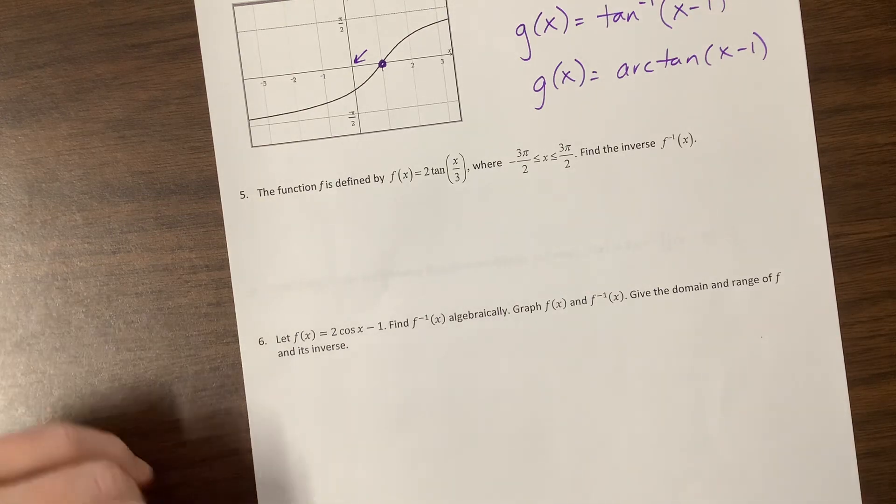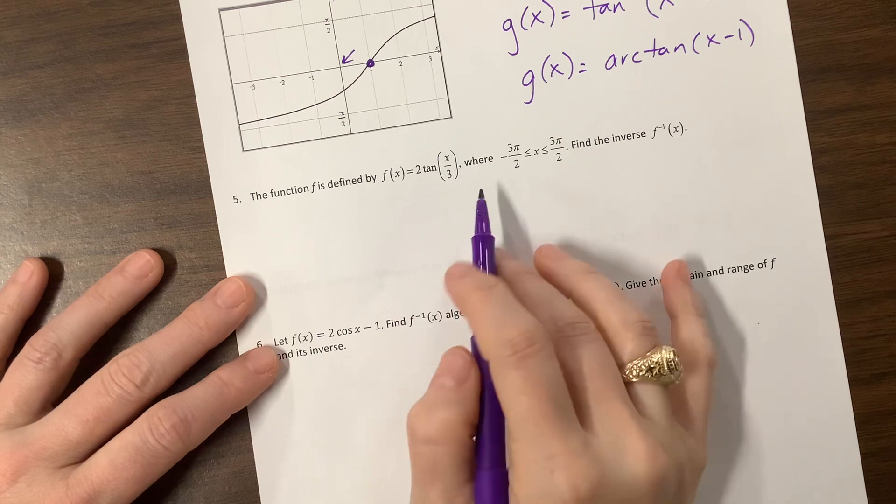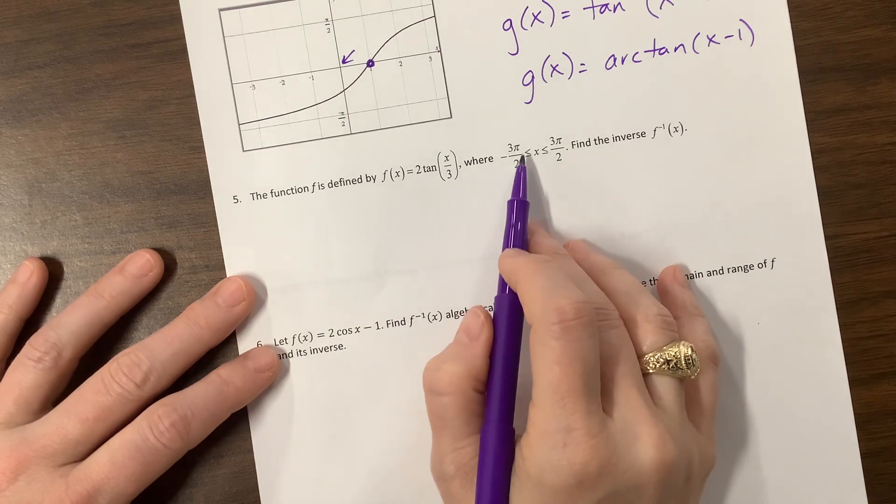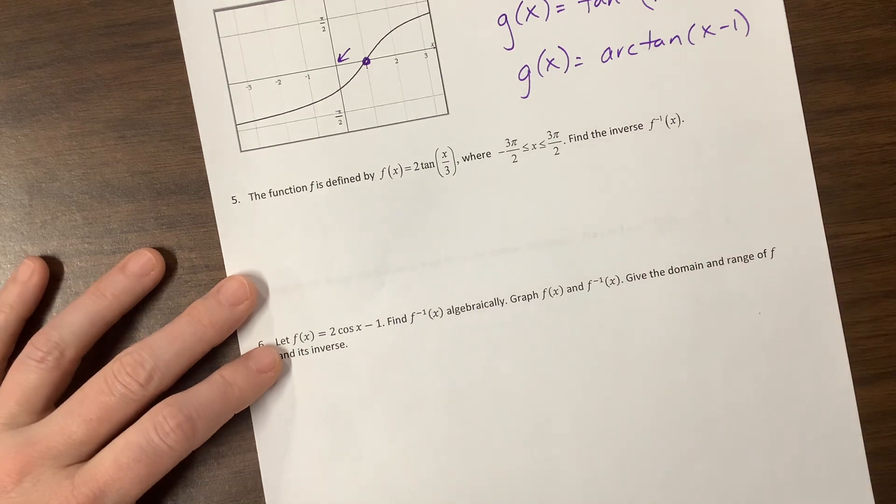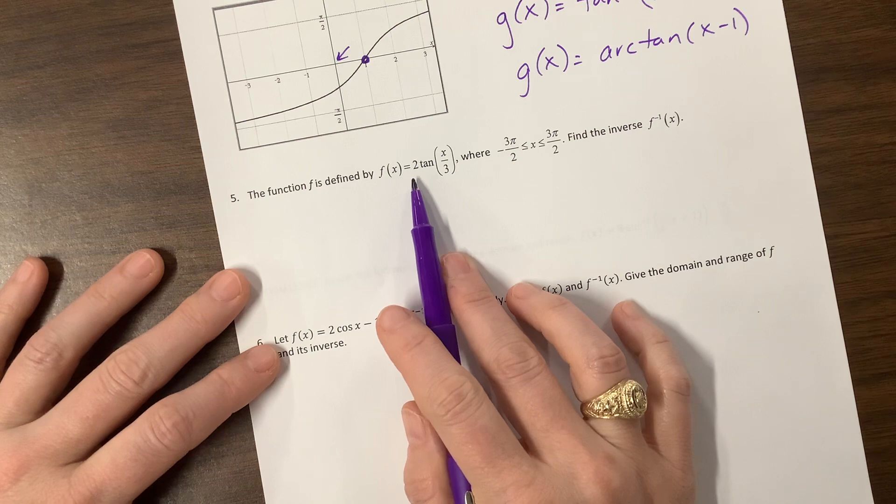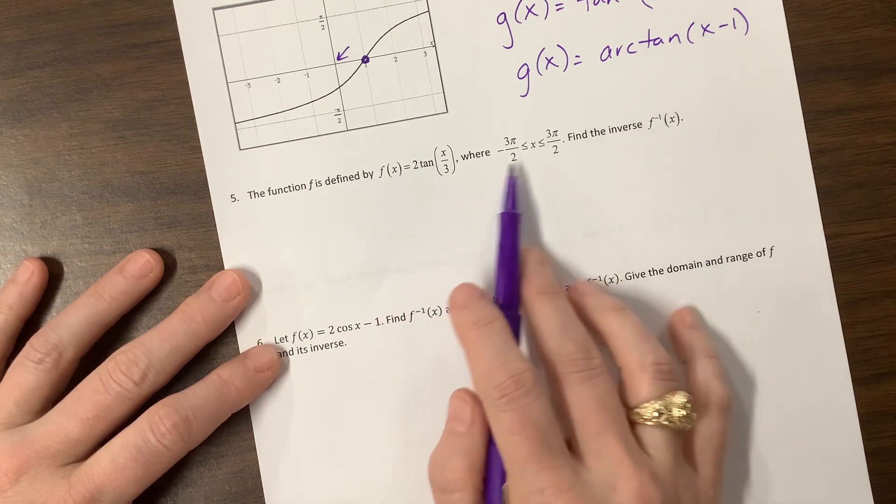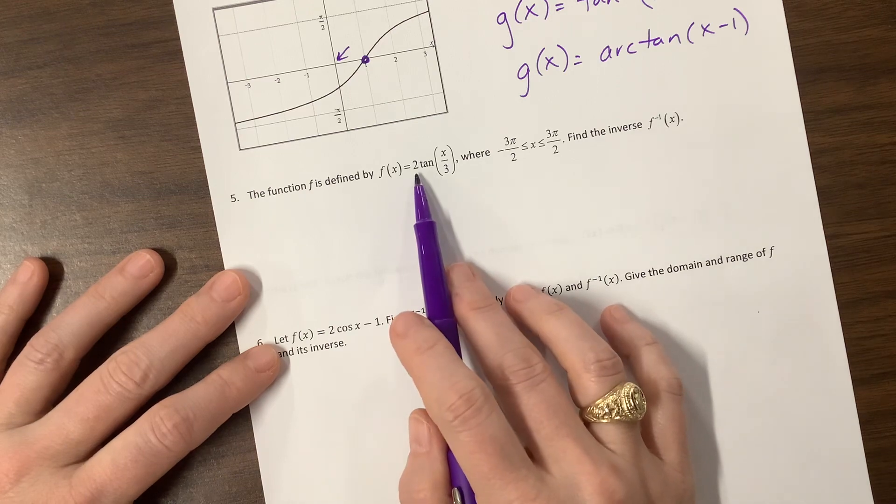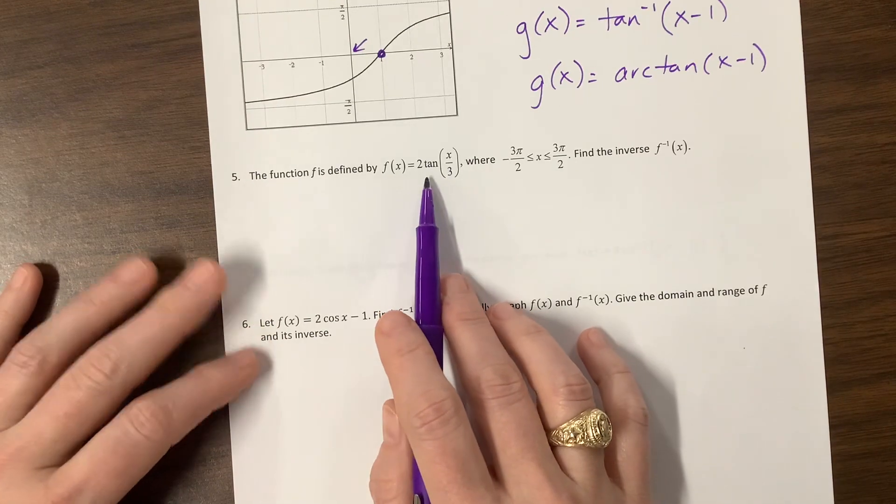Okay, the function f is defined by 2 tangent x over 3, where we live between negative 3 pi over 2 and positive 3 pi over 2, find the inverse. Okay. So basically, what this has done is it has, oh, okay. We're looking at, we've had a vertical stretch of 2, which, not going to lie, I find that kind of annoying with tangent.